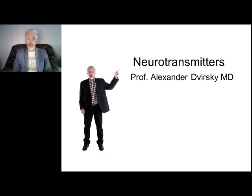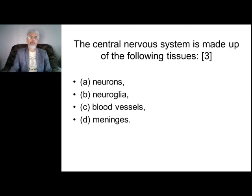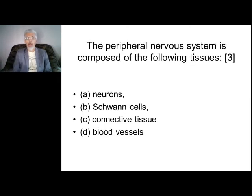Today our lecture is on neurotransmitters. I am Professor Alexander Dvirsky from the psychiatry department. The nervous system consists of several types of tissues: neurons, neuroglia, blood vessels, and meninges.